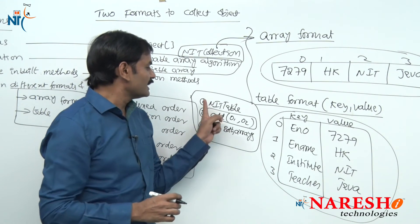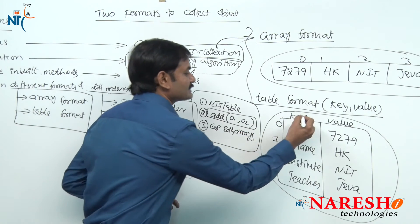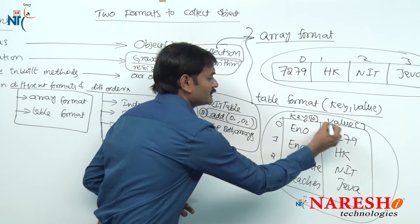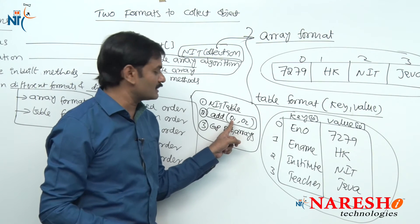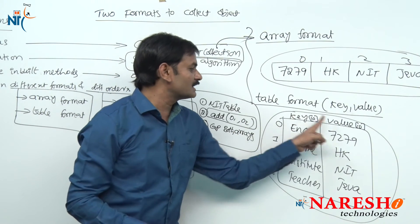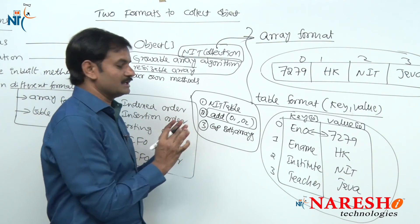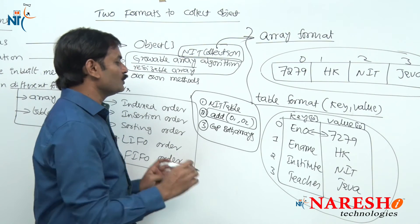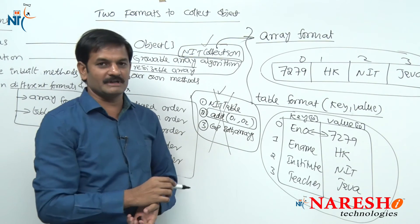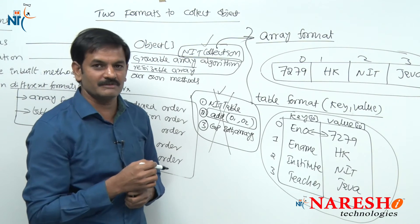So the simple difference is: NIT collection works on one array; NIT table works on two arrays. The add method should store the key object in the key array and the value object in the value array at the same index. No need to develop this class yourself — the code is already developed by Sun Microsystem, so let us start using it.